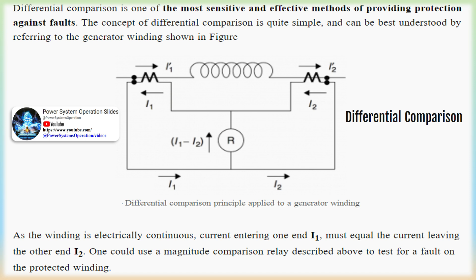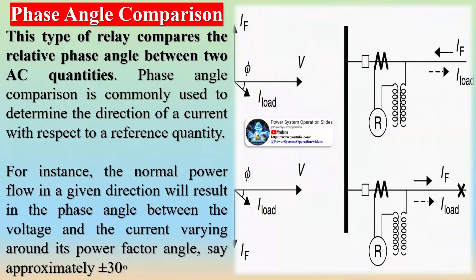One could use a magnitude comparison relay described above to test for a fault on the protected winding. When a fault occurs between the two ends, the two currents are no longer equal.